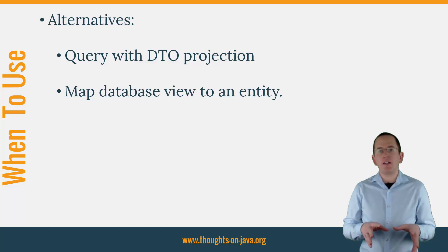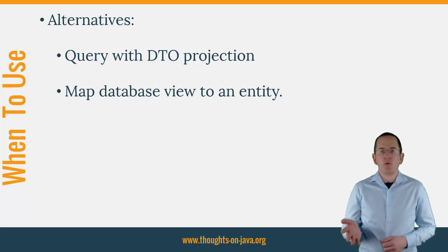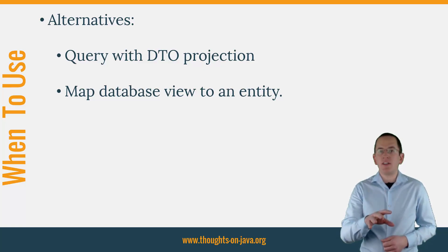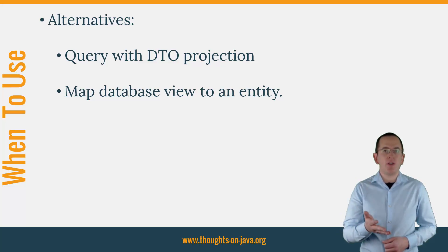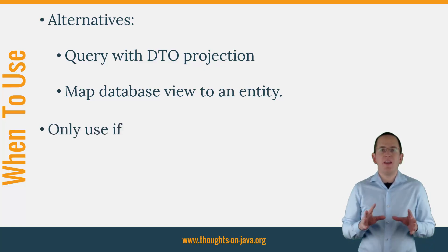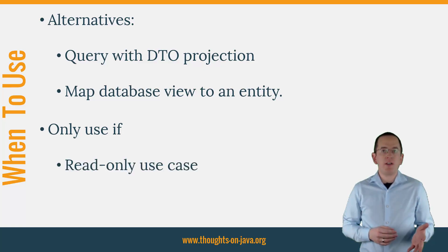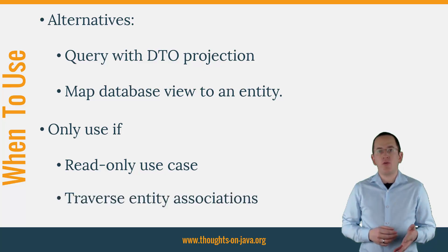You can find a link to the article in the video description. If you want to implement write operations, then a database view might be a better choice. You can easily map a view to an entity. Depending on the database system and the query that defines the view, you can then use that entity to implement your write operations. To sum it up, you should only map an entity to an SQL query if you need to implement a read-only use case that forces you to traverse managed associations to other entities.